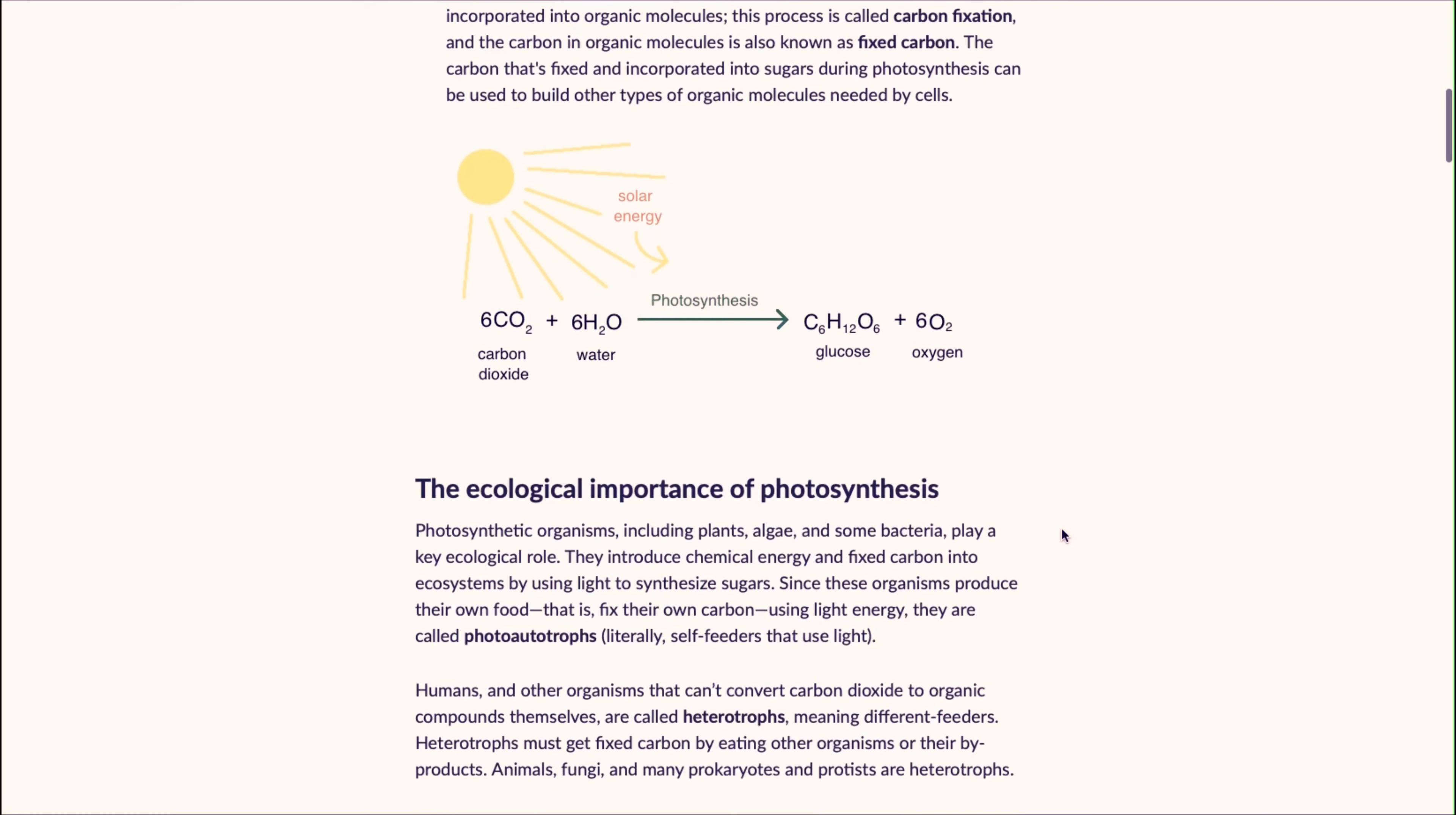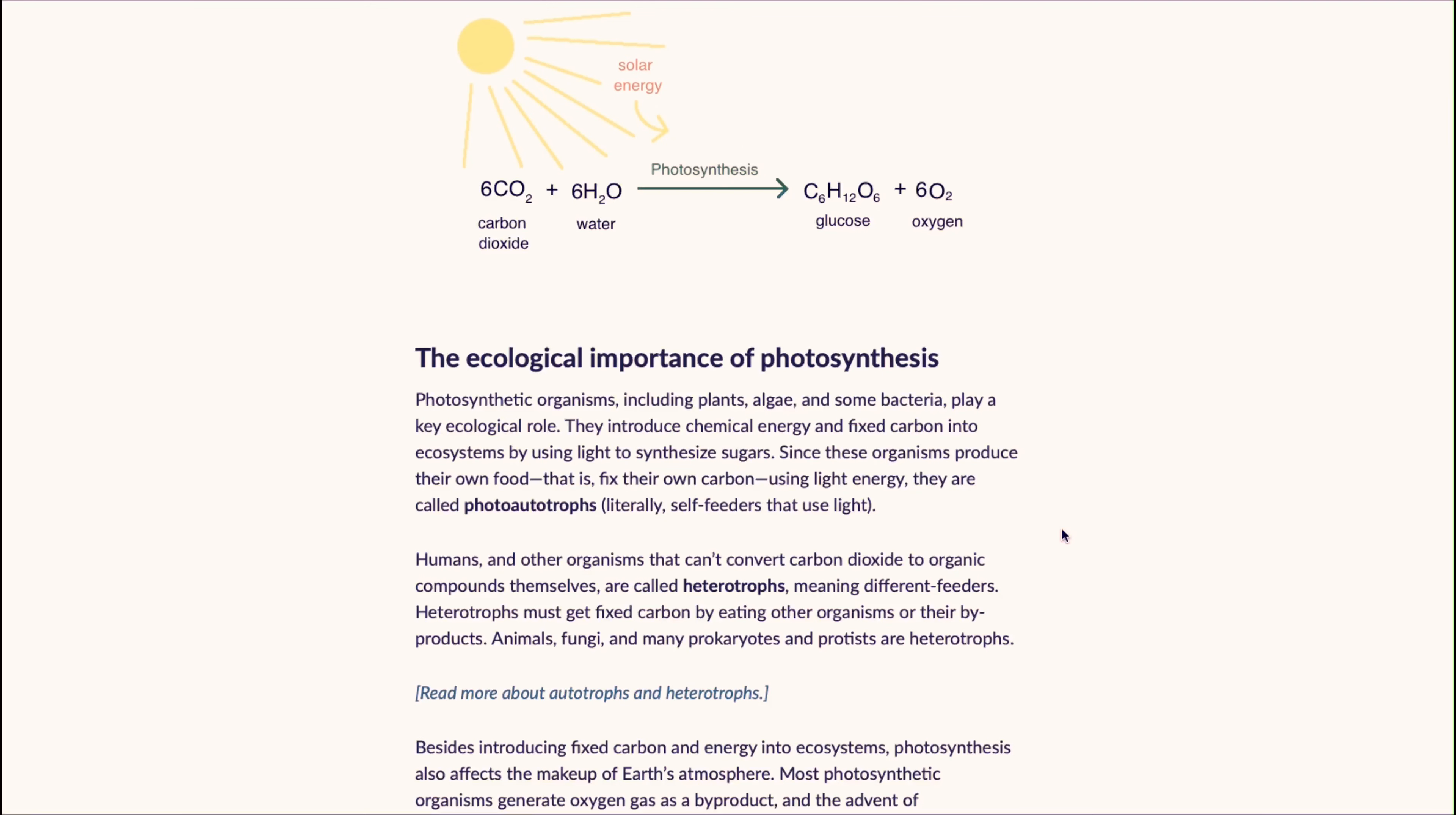Fixed carbon from carbon dioxide, also known as inorganic carbon, can be incorporated into organic molecules. As you can see, that is the chemical formula for photosynthesis in which they convert the carbon dioxide and water into glucose and oxygen.